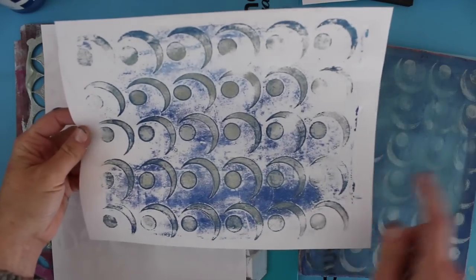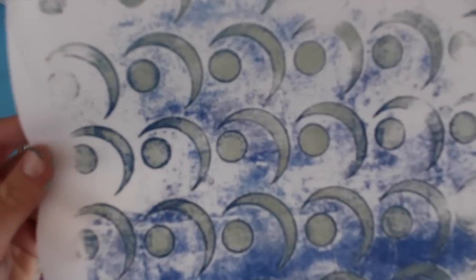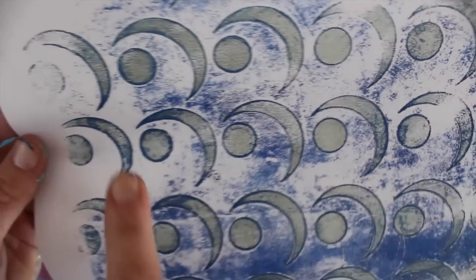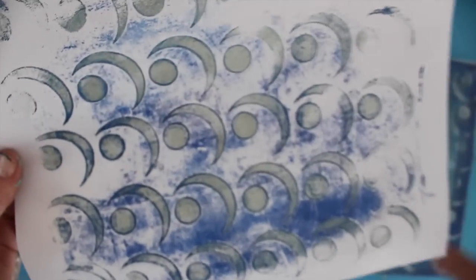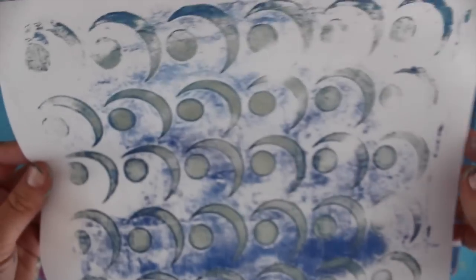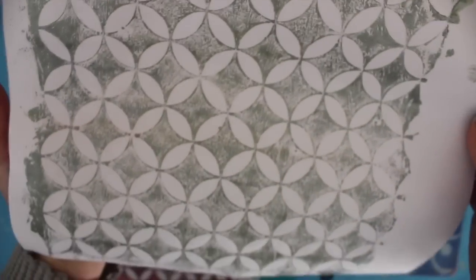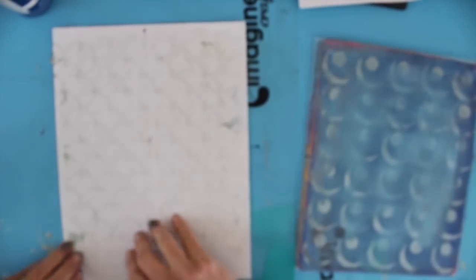There's my print off of the jelly plate and see how it has almost like an outline and that's because the jelly will allow you to kind of squish that down in because it's deeper. And here's the stencil print which is lovely.